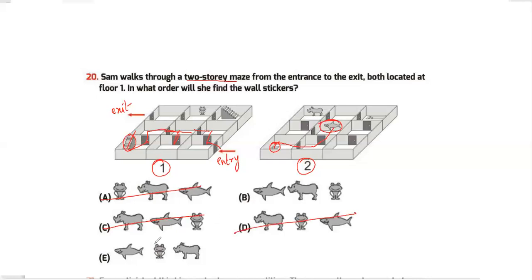On the second floor, going through the doors, the first thing you find is the shark. At that point I can eliminate options A, C, and D, leaving options B and E. Continuing, after the shark you find the rhino. That confirms the answer. Going further: down the stairs, through a door you meet the frog, then exit. My answer is option B.